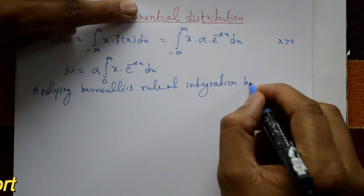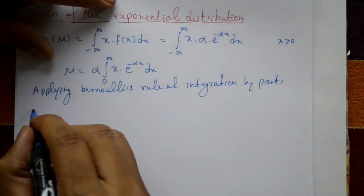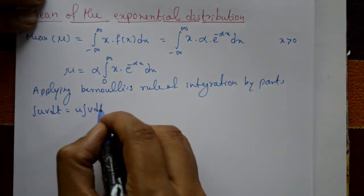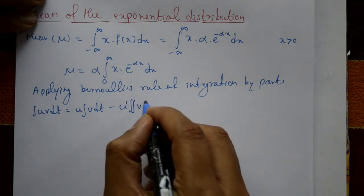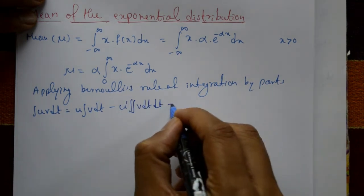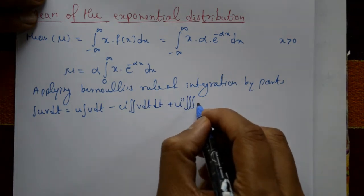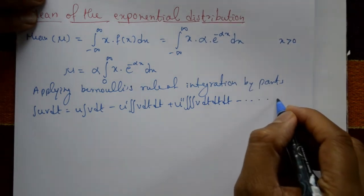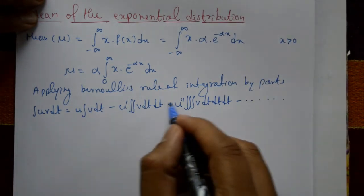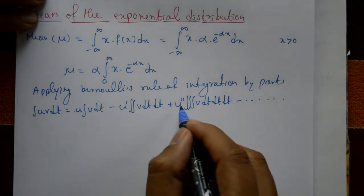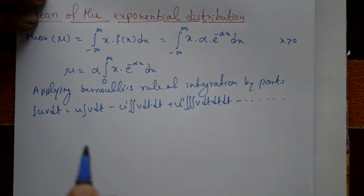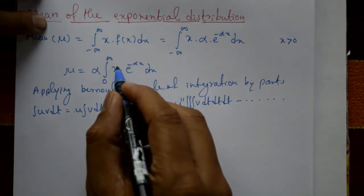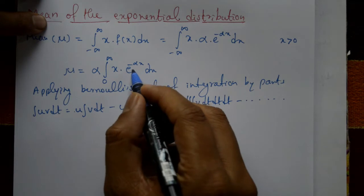The integration by parts (Bernoulli's rule) states: integration of u·v dt equals u·(integration of v dt) minus u′·(integration of integration of v dt) plus u″·(integration three times of v dt) minus and so on, with alternating plus and minus signs. This is Bernoulli's rule of integration by parts.